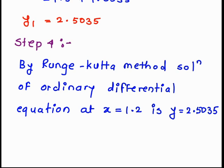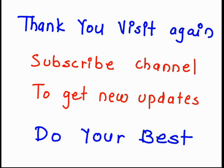Step 4 is always the conclusion. By the Runge-Kutta method, the solution of the ordinary differential equation at x = 1.2 is y = 2.5035. The conclusion: use the formula to find k₁, k₂, k₃, k₄ and substitute into the final formula to get the corresponding value. Thank you, visit again, subscribe the channel to get new updates — do your best, thank you.